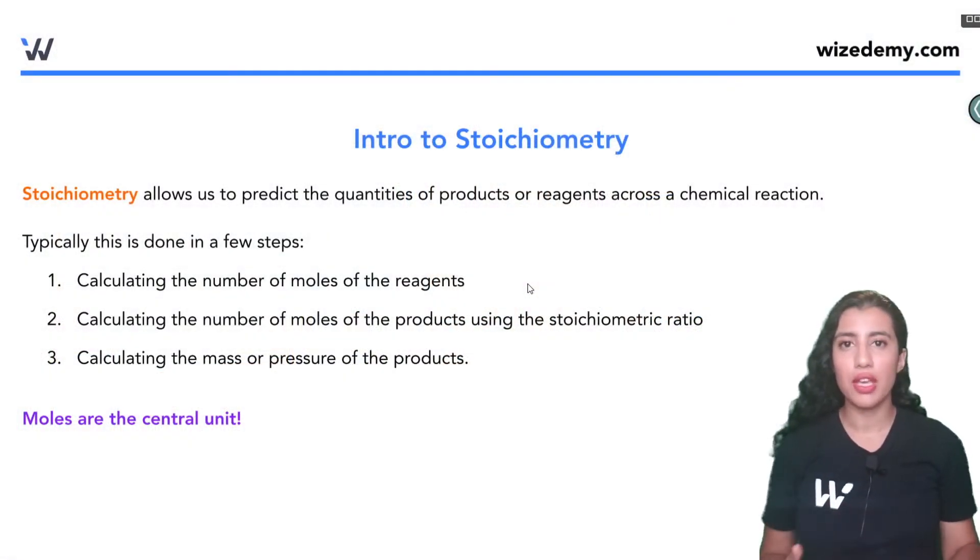First we should understand just generally what kind of problems we'll be doing and what kind of steps we'll be following. So typically we'll be first figuring out the number of moles of a reagent, that's a reactant, and then we'll be using that and the balanced chemical equation, the stoichiometric coefficients in that balanced chemical equation, to figure out then the moles of a product. And then once we have the moles of a product we can figure out whatever quantity we're interested in like the mass or pressure of the product. But the key here is that the moles are the central unit.